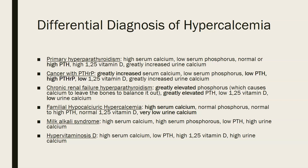In cancer with parathyroid hormone-related protein (PTHrP), you will see greatly increased serum calcium — these patients usually have very high calcium levels — and low serum phosphorus because they move in opposite directions. In this case you will see low PTH, high PTHrP if tested, low 1,25-hydroxyvitamin D, and greatly increased urine calcium due to the high serum calcium.